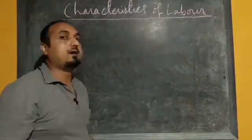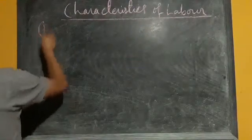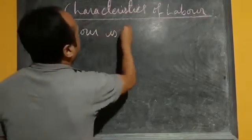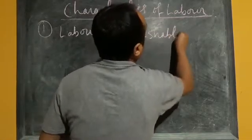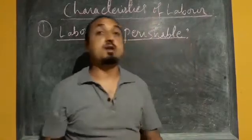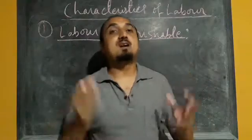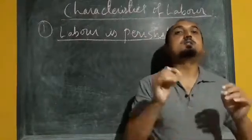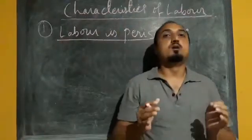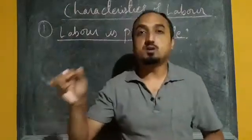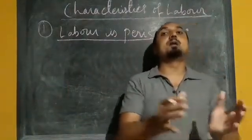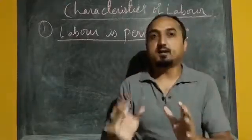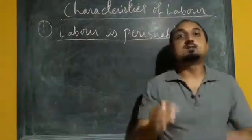How is labour different from land as well as from other factors of production? The first characteristic we have is labour is perishable. What is meant by perishable? Perishable means that which cannot be stored for a long time, and if we store it for a long time it will decay. But here the concept is a little different. Perishable means if the workers are not going for work on that particular day, then for that particular day his labour is wasted. Suppose I am a teacher and if I am not doing any work related to teaching for that particular day, my labour for that day is wasted. That is called perishable.